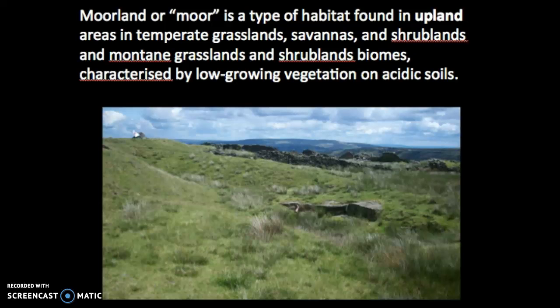The setting also talks about the moors that are around the hall. Baskerville Hall was set amongst the moors. Moors, or moorlands, are a type of habitat found in upland areas — kind of a temperate grassland, savannas, and shrublands. Parts of England are considered to be moors. They have very low-growing vegetation and very acidic soil, so not a lot of trees grow there.